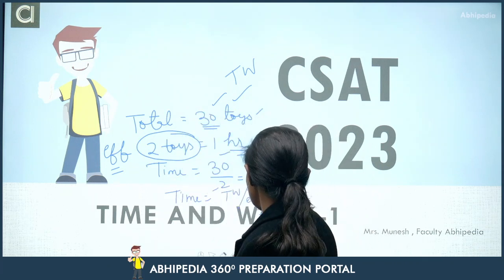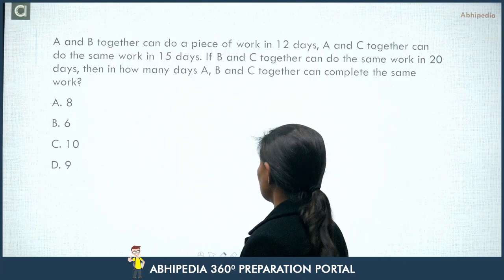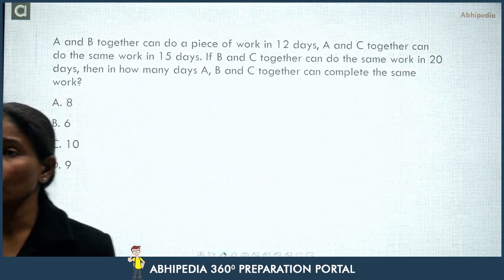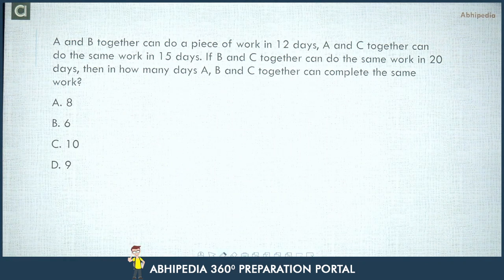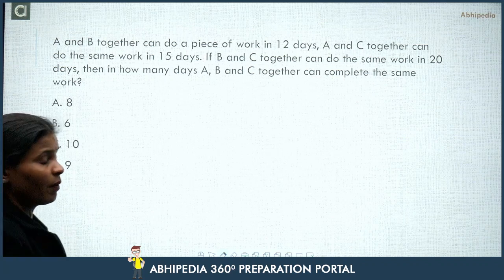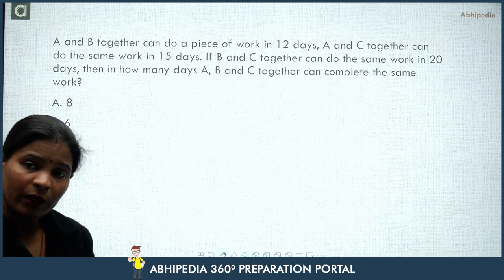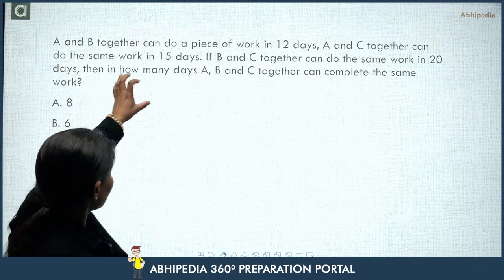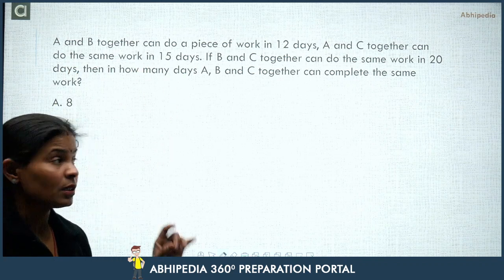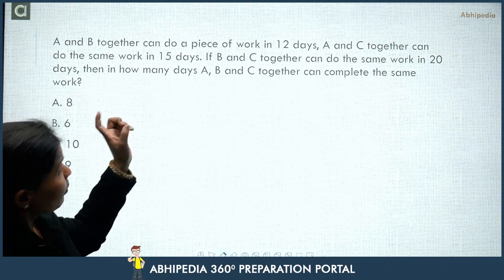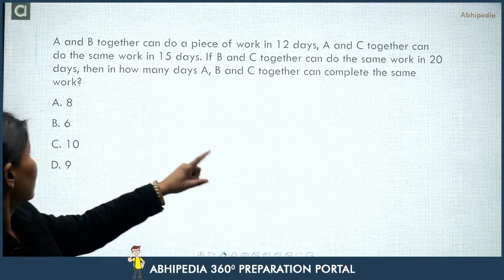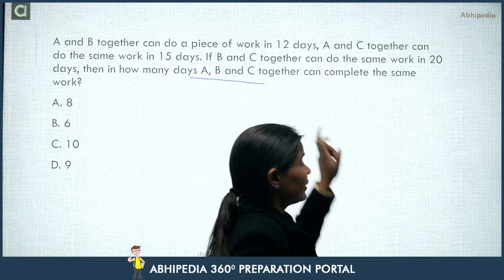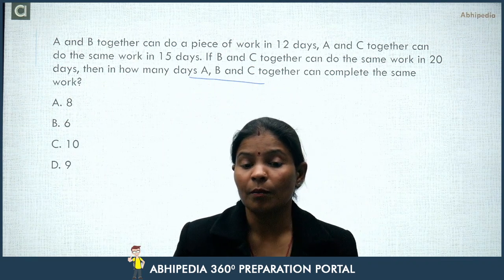Now we will discuss some questions that are important from an exam point of view — all of you need to solve these with me. Here is the first question: A and B together can do a piece of work in 12 days. A and C together can do the same piece of work in 15 days. B and C together can do the same work in 20 days. Then in how many days can A, B, and C together complete the work?